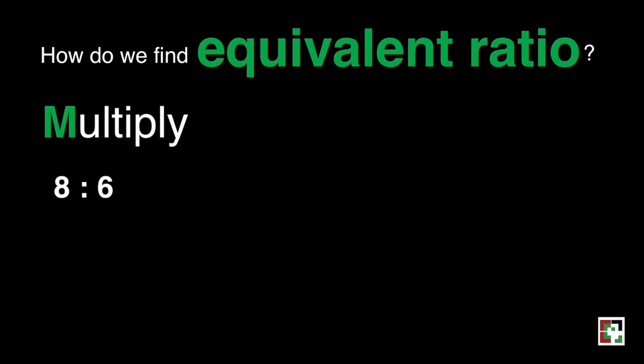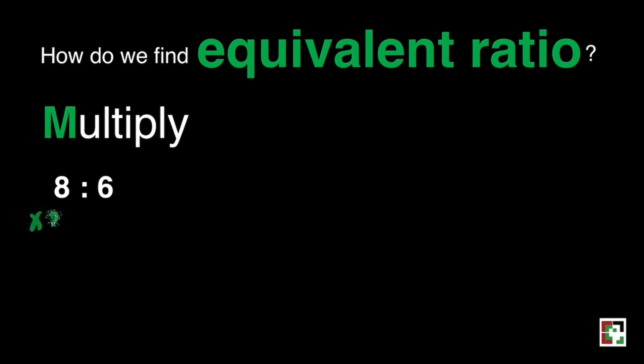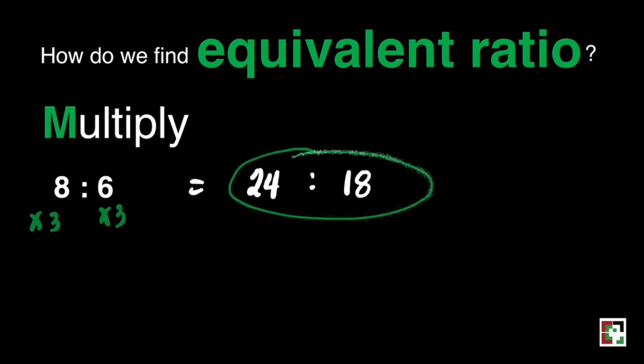What if we have here 8 is to 6? We can think of a number to multiply this. And that would be 3. 8 times 3 is equal to 24, and 6 times 3 is equal to 18. And that's it.